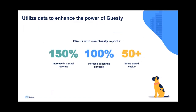Data is an incredibly powerful tool when it comes to growing your rental business, and when paired with a PMS as complete as Guestie, the power is only enhanced. Using data from Transparent with Guestie means making data-driven decisions that can majorly impact your inventory, bookings, and revenue stream. Clients using Guestie have reported a 150% increase in annual revenue, 100% increase in listings annually, and 50 hours saved per week. Pairing that with data enhances those results further — it's the ultimate combination to ensure you're making the right data-driven decisions at the right time.